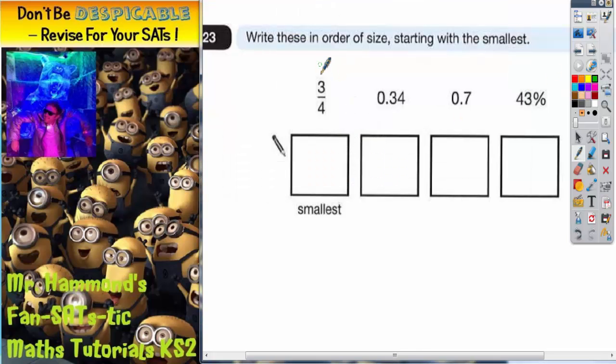Question 23 says write these in order of size, starting with the smallest. Now what we've got is a mixture of fractions, decimals, and percentages, so they're all in different formats. The easiest thing to do is turn them all into the same format so they are easier to compare.